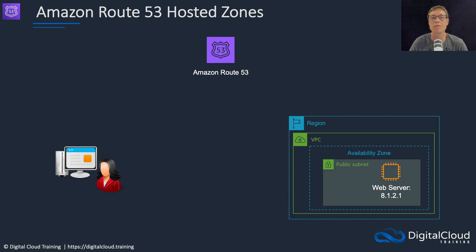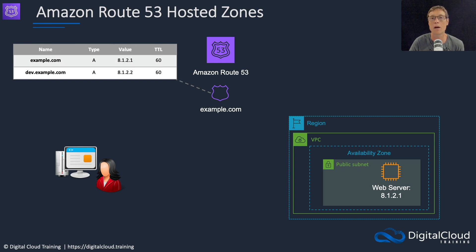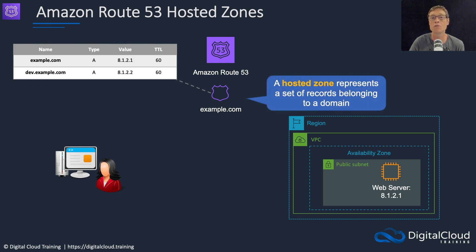Route 53 is a service that we can use for DNS resolution. We can create things called hosted zones. You can have public and private hosted zones. A private hosted zone is just for your internal VPC-based resources, whereas a public hosted zone can be used from the internet, so anyone can look up the DNS records that you're publishing. A hosted zone represents a set of DNS records belonging to a specific domain.